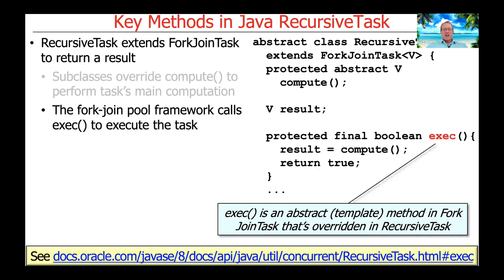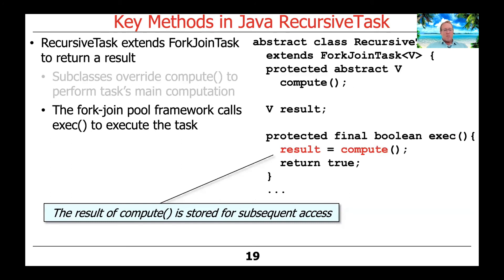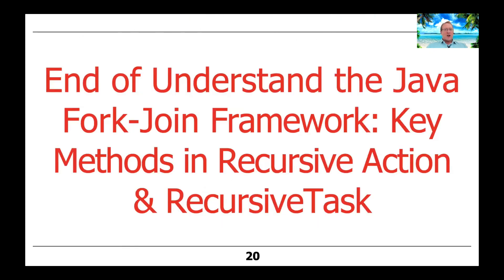As before, there's an exec method that's part of the implementation details — again a template method that ends up calling the compute hook method. In this case, which is how it differs from RecursiveAction, compute actually returns a value, which gets stashed away inside the ForkJoinTask. That value is then used when we join things together to get the result back. These are the most common ways of providing user-defined fork-join tasks in the context of the fork-join framework.